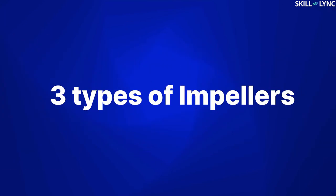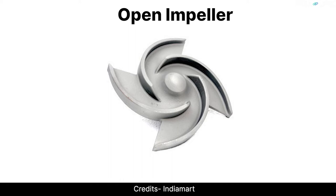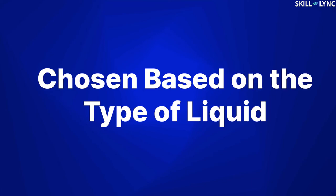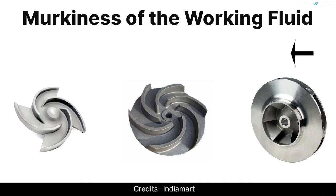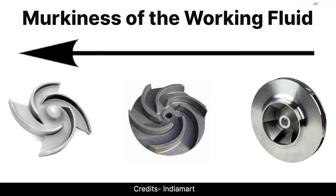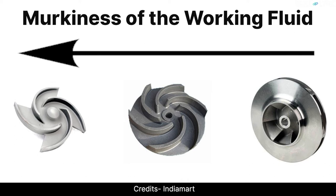There are three different types of impellers that are commercially available: the open type impeller, the semi-open impeller, and the closed type impeller. The impeller type is chosen based on the liquid. If the working liquid is cloggy and has a lot of sediments in it, an open type impeller is used. If the working fluid is clean with no impurities, a closed type impeller is used. If a closed type impeller is used in murky water, the impurities in the water can clog the impeller and prevent it from functioning properly.